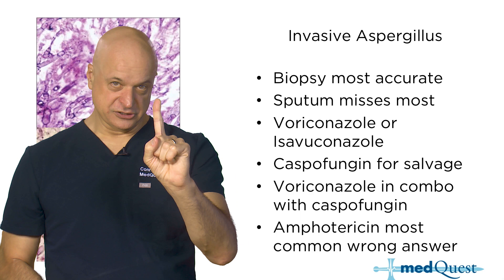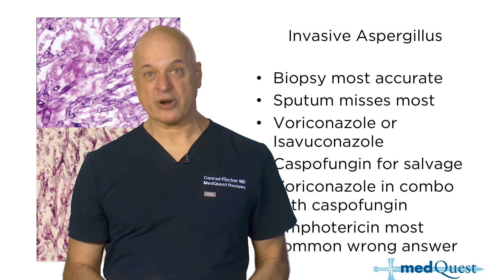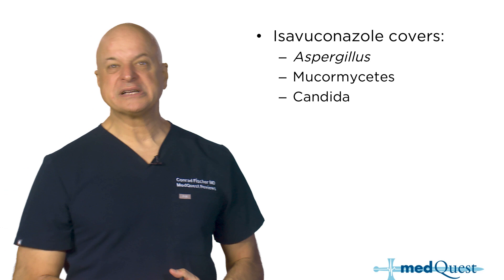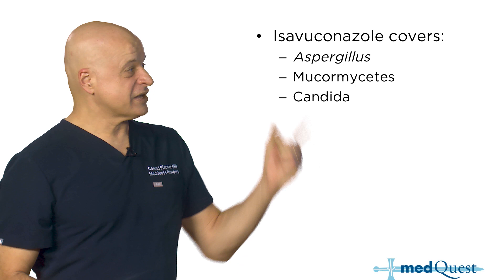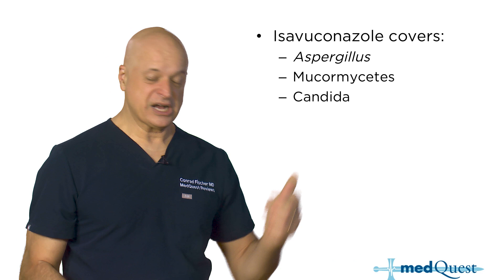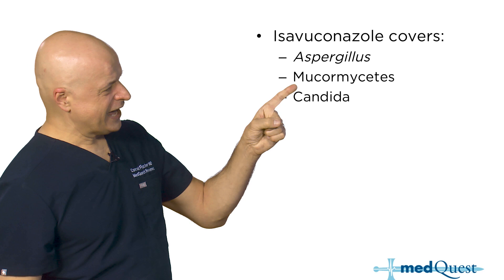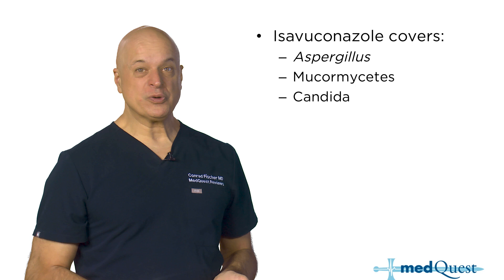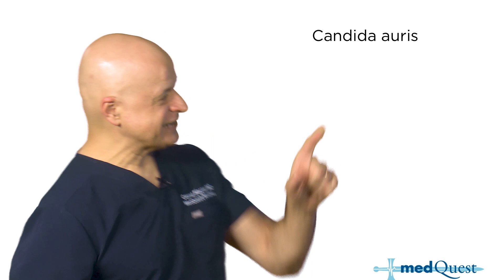What's left for amphotericin? Mucormycosis, cryptococcus, and some widely disseminated dimorphic fungi. Isavuconazole is almost 10 years old — it does better than amphotericin with less adverse effects. Candida auris — named because it was found in a Japanese ear. You need to know about it because it happens in immunocompromised hospitalized people. We isolate those patients to keep it from spreading to vulnerable others.